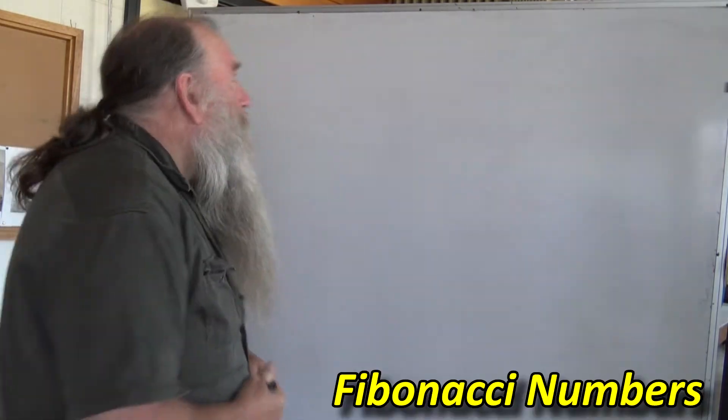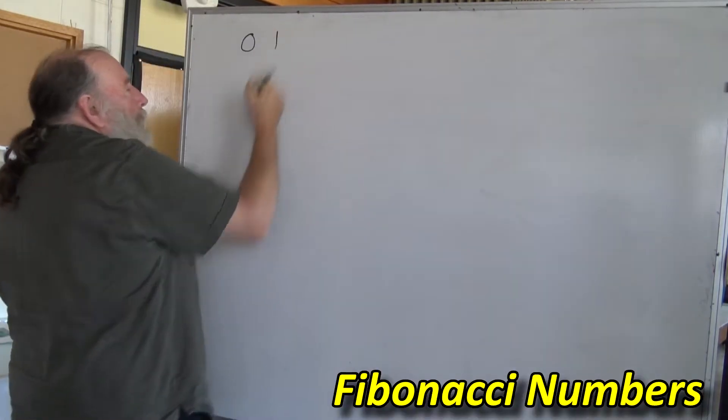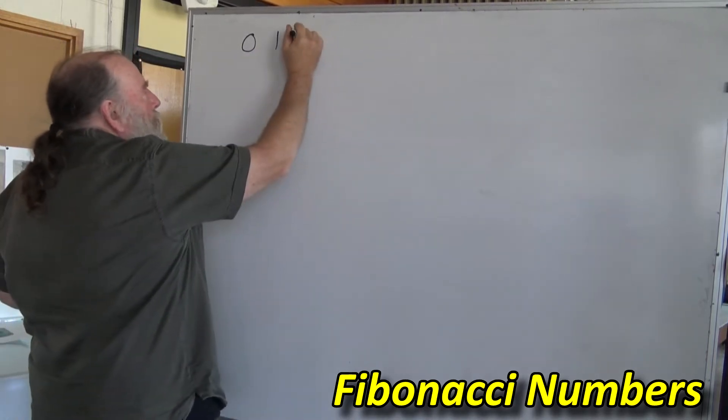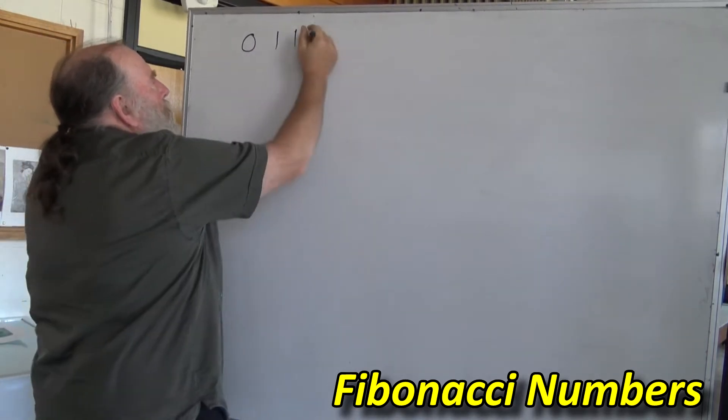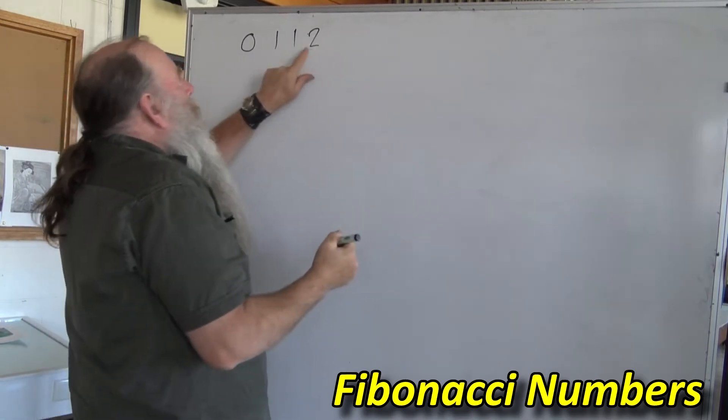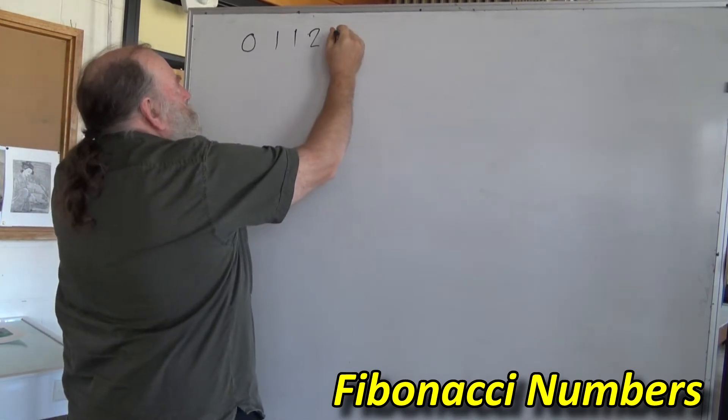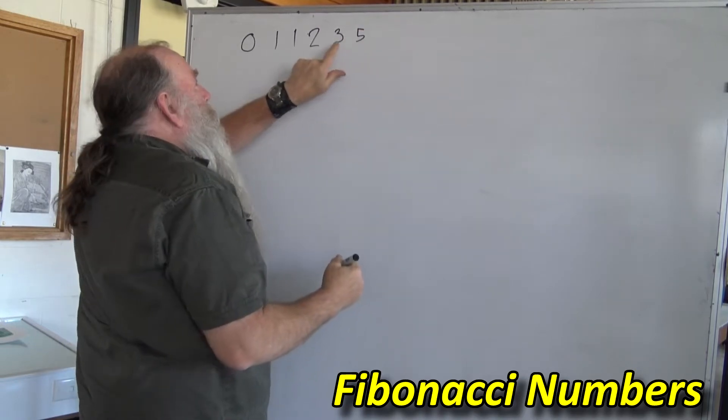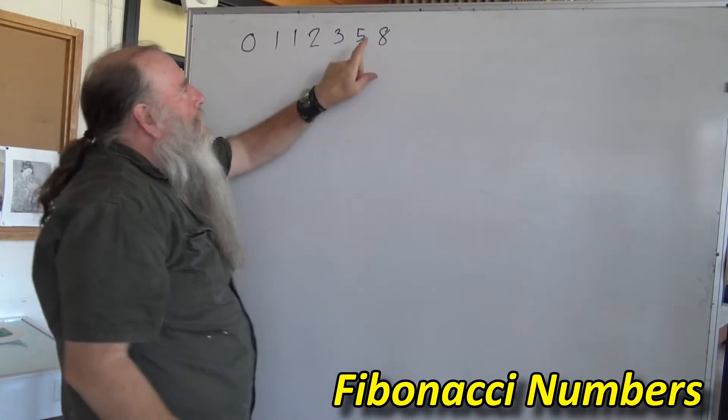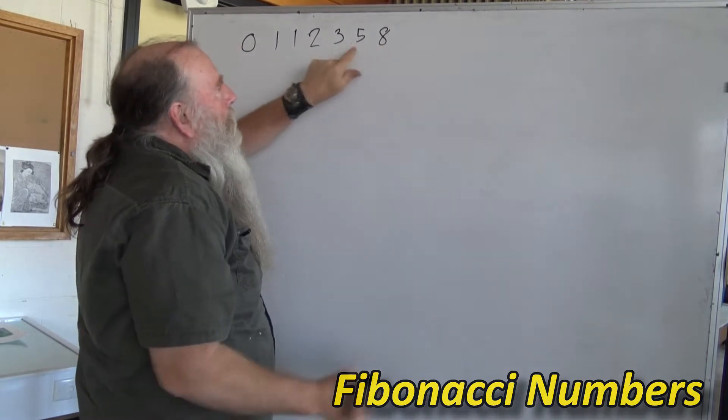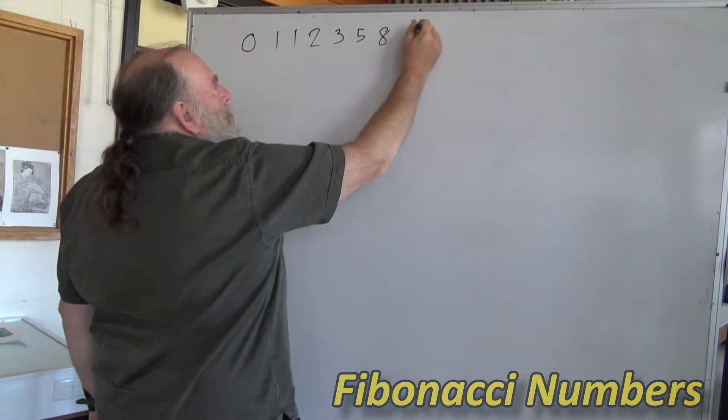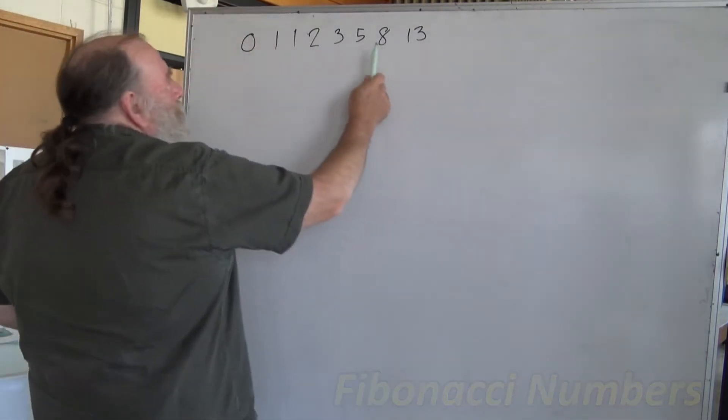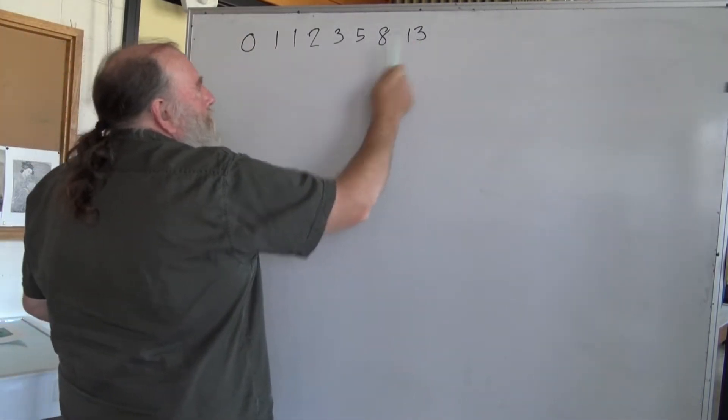Let's just have a look at the Fibonacci Sequence. Starting off with zero, and then the next one I thought we'd go one. One plus zero equals one. One plus one equals two. Two plus one equals three. Three plus two equals five. Five plus three equals eight. Eight plus five equals thirteen. And on this, you just add those two numbers to get the next one.